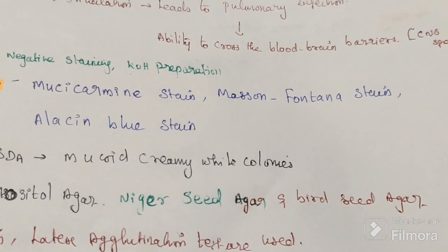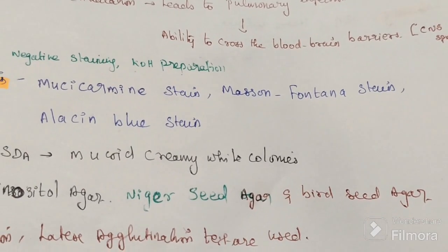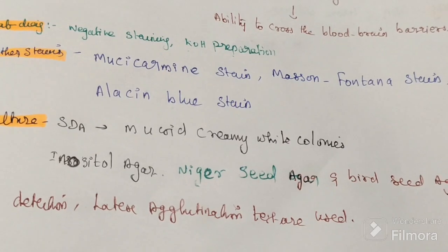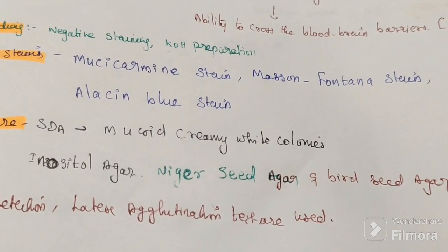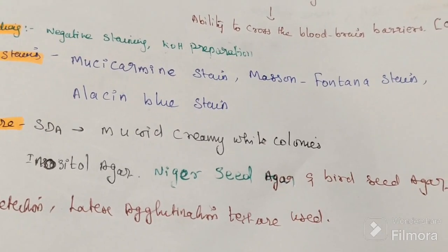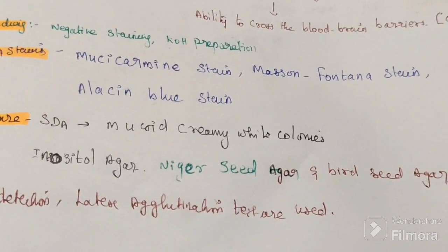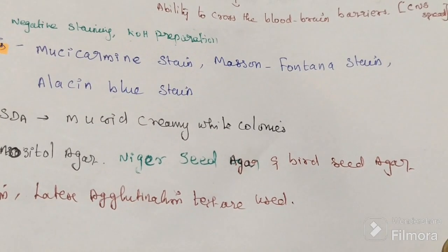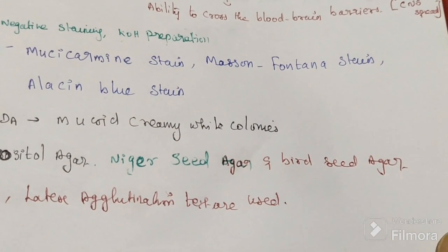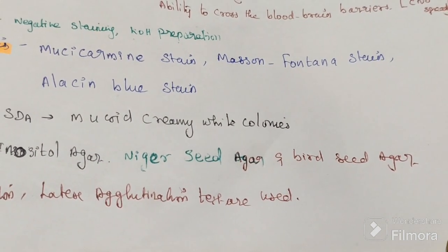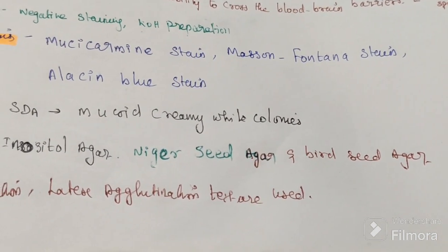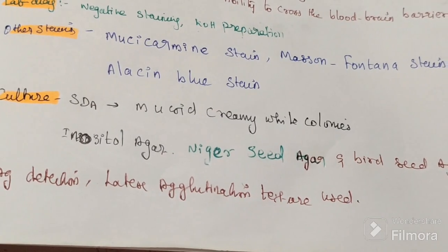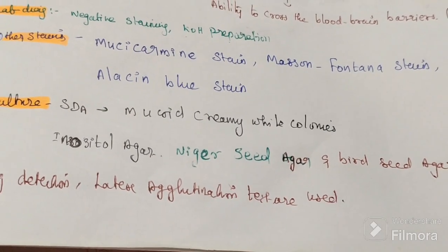For laboratory diagnosis of cryptococcosis: staining methods include mucicarmine, Masson-Fontana, and alizarin blue staining. For culture, Sabouraud dextrose agar is used, producing mucoid creamy white colonies. Inositol agar medium and niger seed agar (bird seed agar) are used for isolation of Cryptococcus. Antigen detection using latex agglutination test is also used.